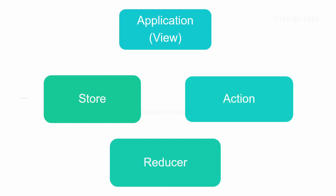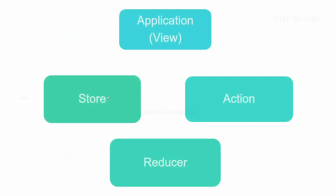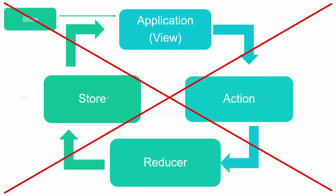In our previous session we have seen data will be sent from application to action, action to reducer, reducer to store, and finally from store to our application, and this application is always subscribed to our store. So whatever changes happen inside the store will be reflected inside our application. We also understood that our Redux application cannot have two stores — in Redux there will always be only one store.